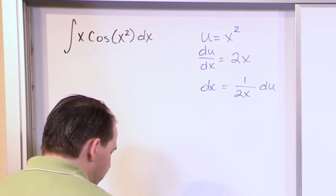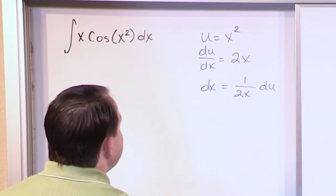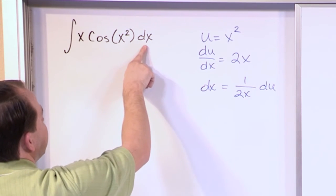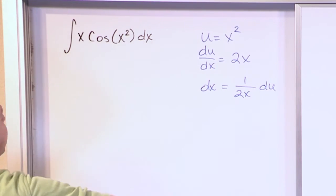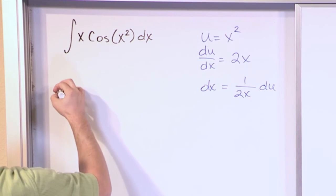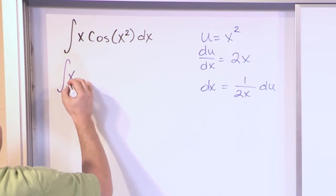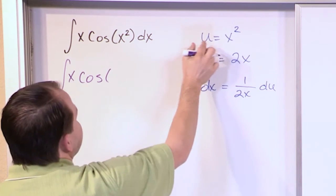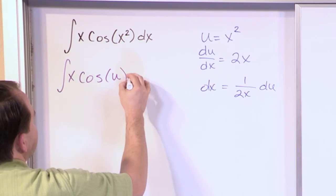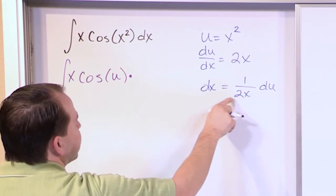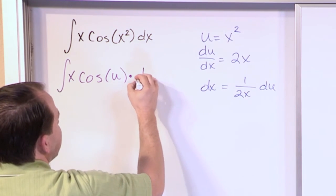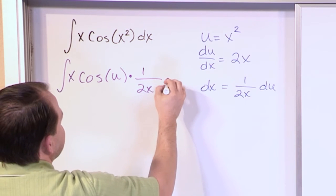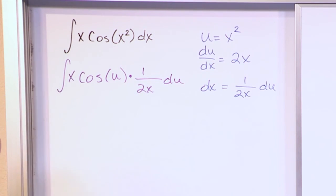So ultimately, what I want to do is take the dx and put it in here, and take the u and put it into what I've substituted for. So what I should have is, I have x, I haven't changed that at all, but I have the cosine of u now. And dx I've solved for, given this substitution, it's 1 over 2x du.